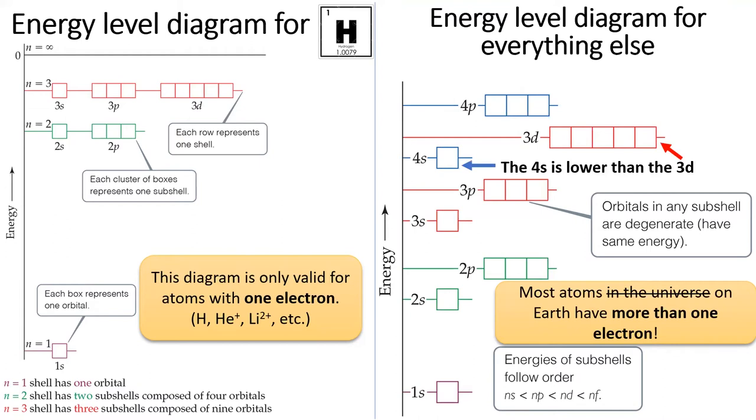The hardest thing for me to remember is that the 4s orbitals are lower in energy than the 3d orbitals. But I have a great way of remembering this order.